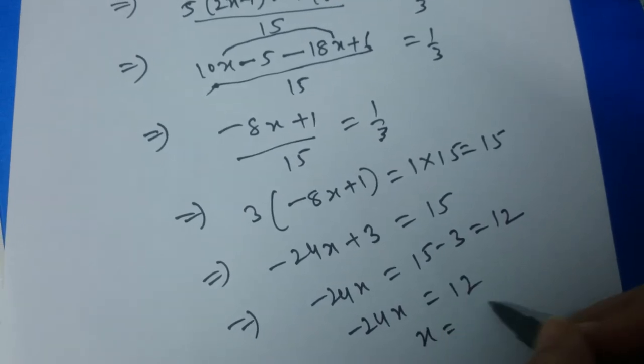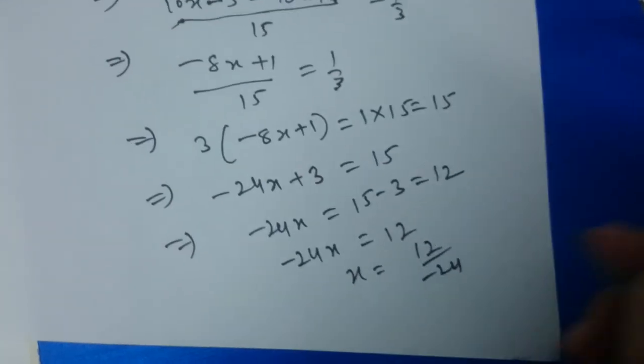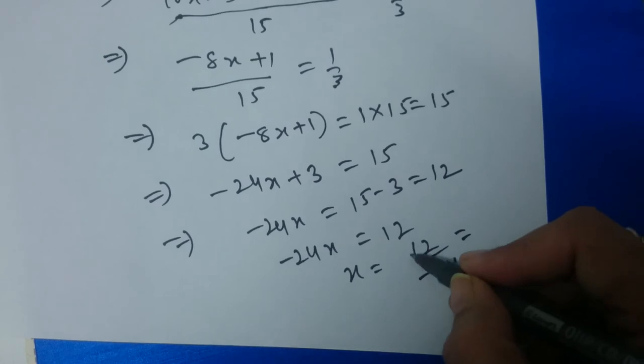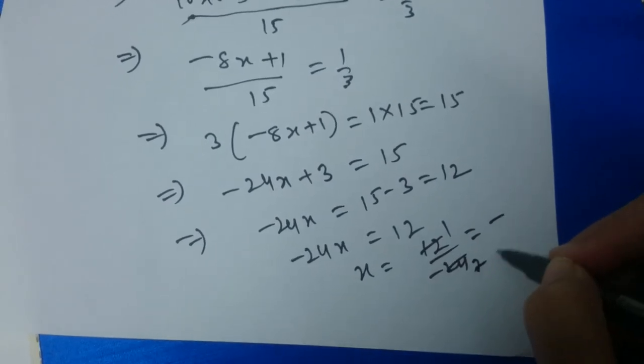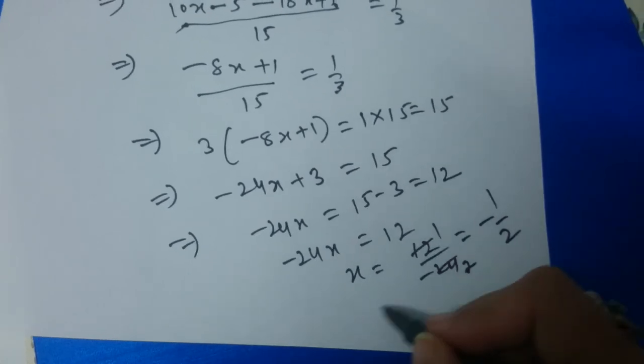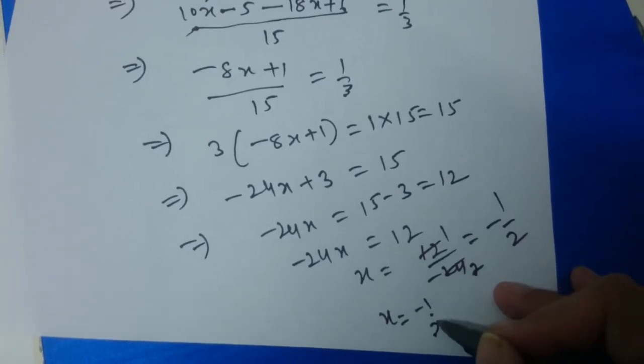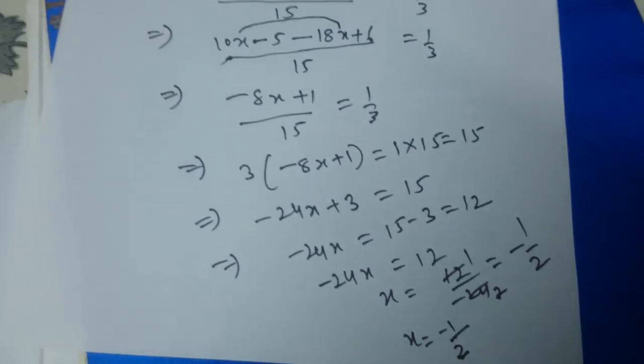So x will be 12 upon minus 24. Now simplify this, that is minus 1 by 2. So x is equal to minus 1 by 2 is the solution of given linear equation in one variable.